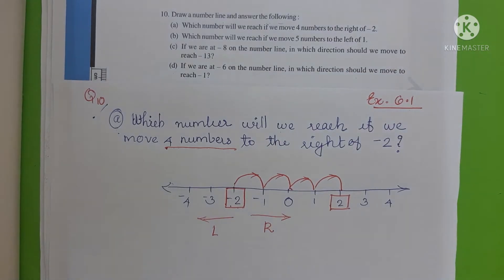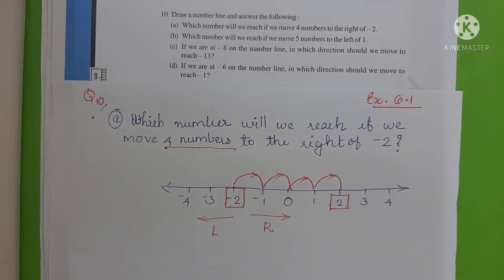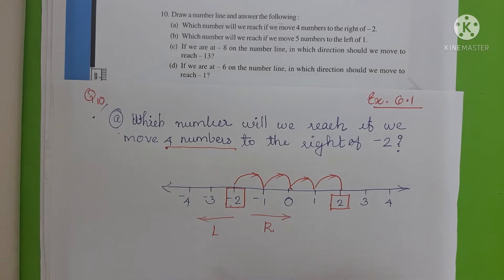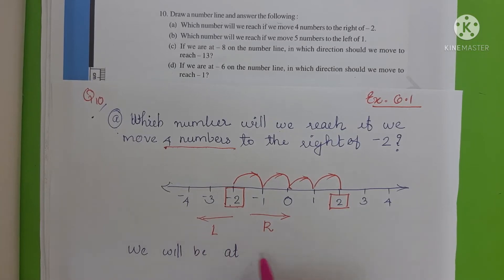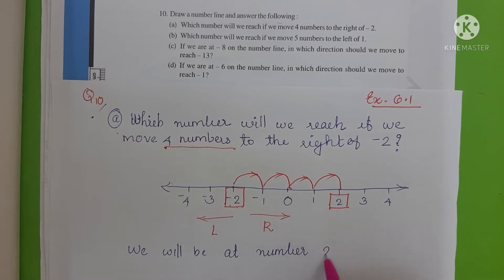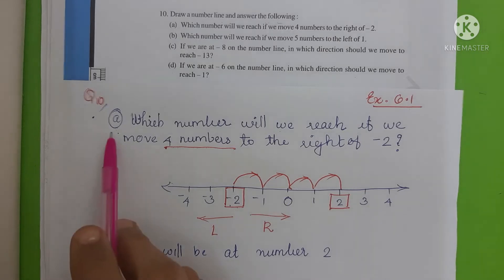That is positive 2. So if we move 4 numbers from minus 2 to the right, we will reach 2. The answer is 2. We will be at number 2. That is the answer for part A.